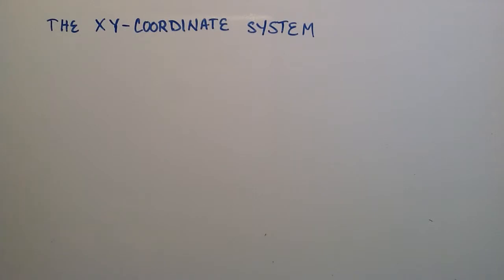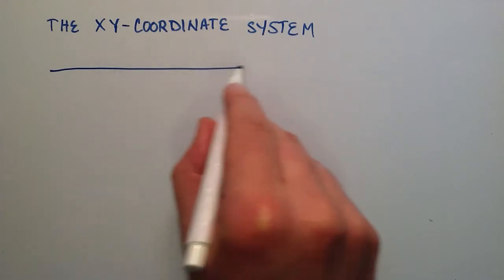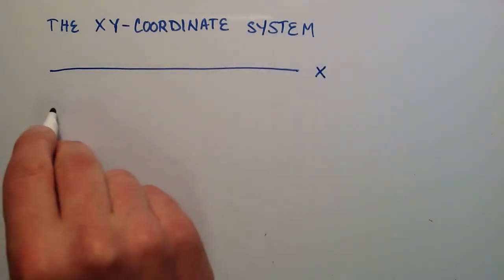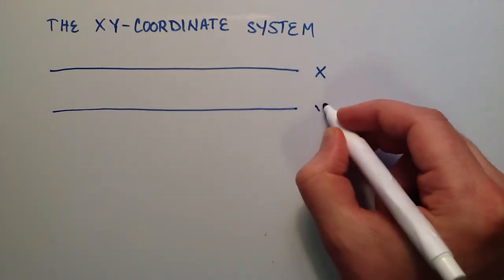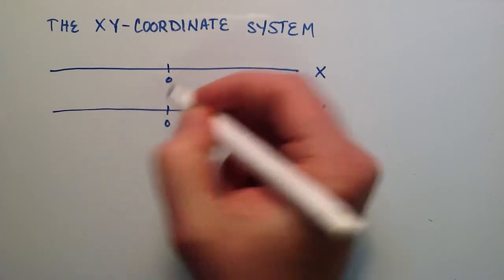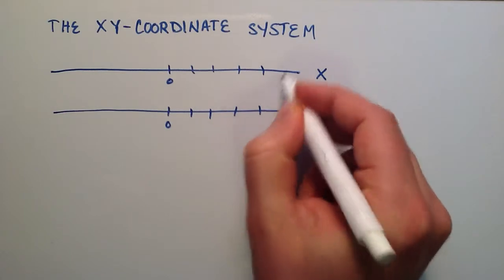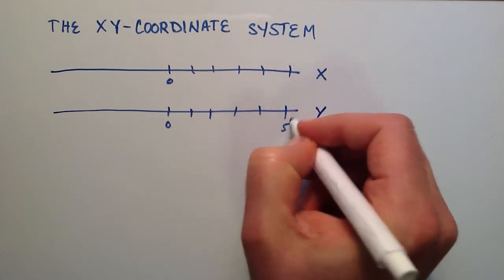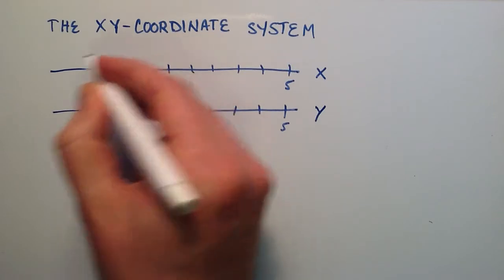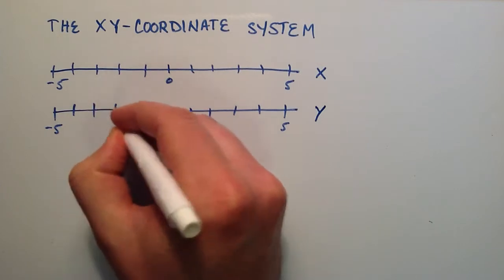I like to think of the x-y coordinate system as just a combination of two number lines. Let's go ahead and draw a couple number lines. This one we're going to name x, and this one we're going to name y. Both of these have the number 0 in the middle, and then we'll put the numbers 1, 2, 3, 4, and 5, and also negative 1 through negative 5, on both of these number lines.